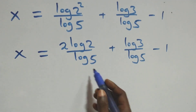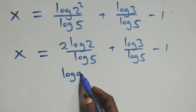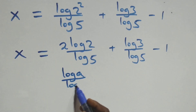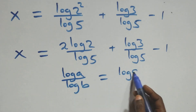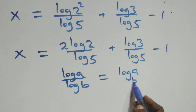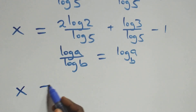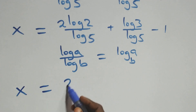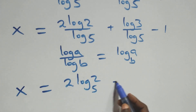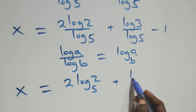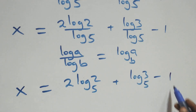We apply the change of base formula: log a over log b is the same as log a to base b. Therefore, x equals 2 log₅2 plus log₅3 minus 1.